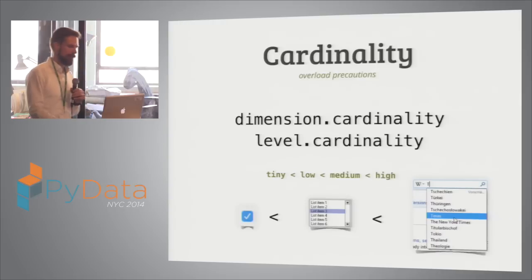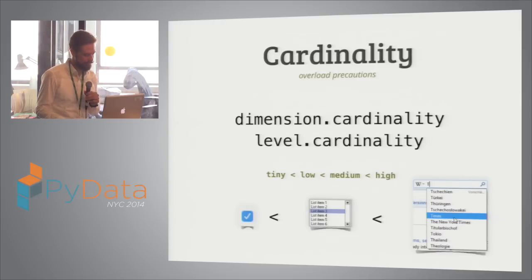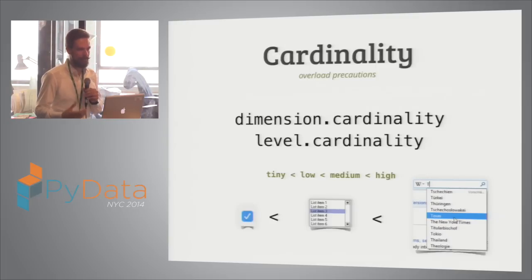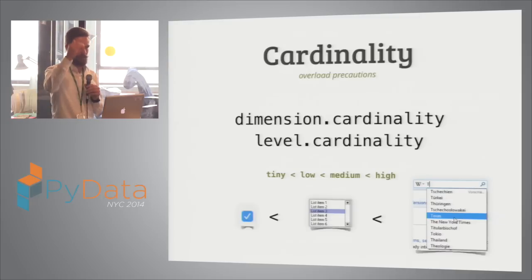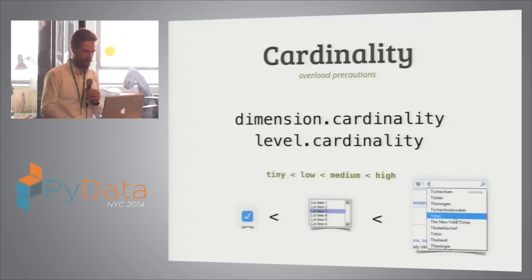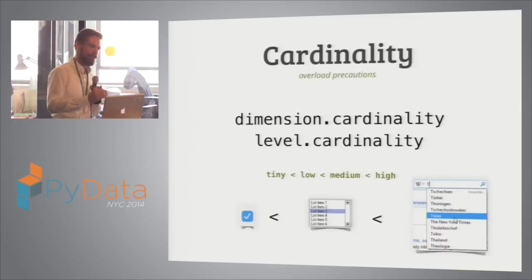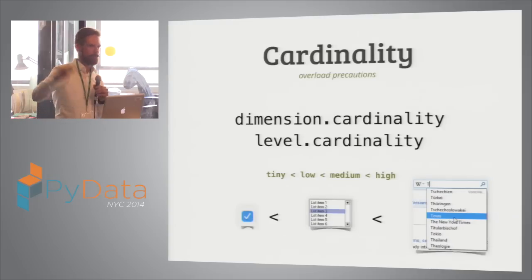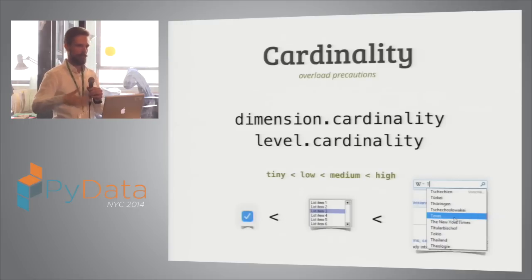Another piece of metadata is cardinality. You can specify the dimension cardinality or a level cardinality, which is used on both sides — frontend and backend. On the frontend side, you use it to know what kind of user interface to display for that dimension or level. If the dimension has high cardinality, you won't display all the values because you can kill your web browser — so you use a search field instead. If it's tiny cardinality, you just display a bunch of checkboxes. On the backend side, it's a kind of prevention for users killing your database. If they try to drill down through a high-cardinality dimension, you can say no — you have to add additional filter conditions to the query first.